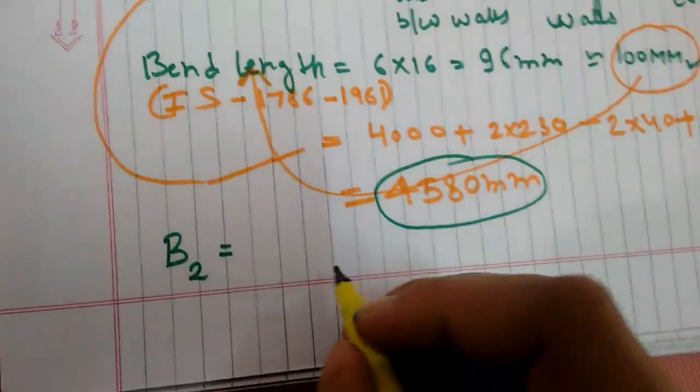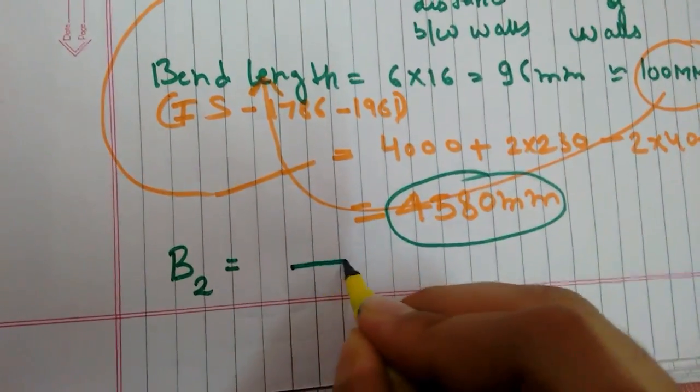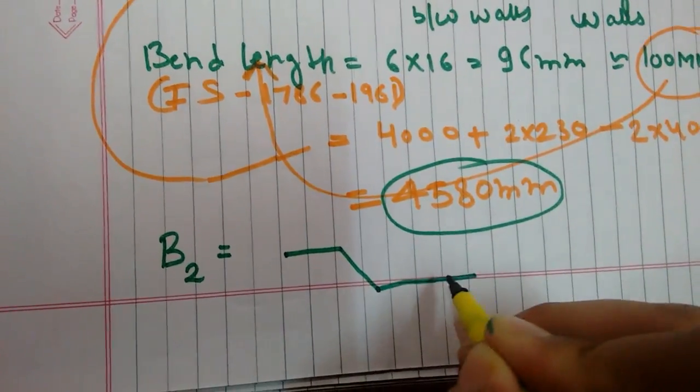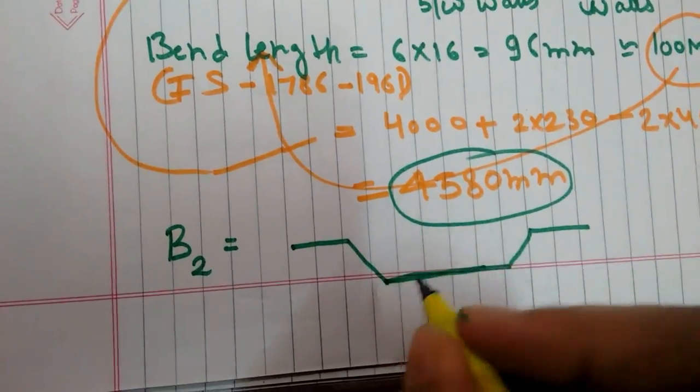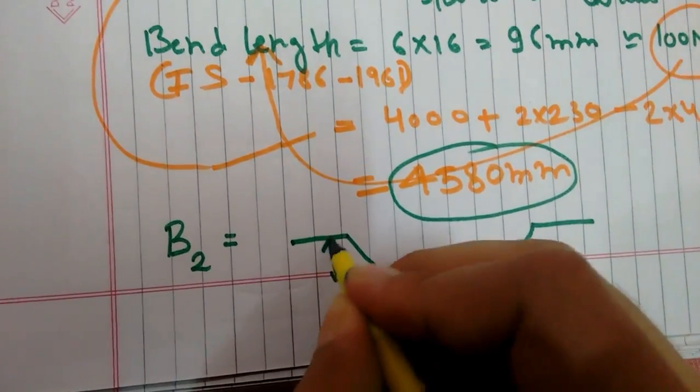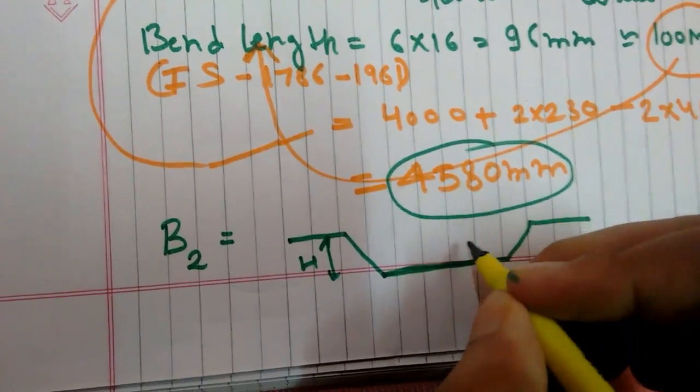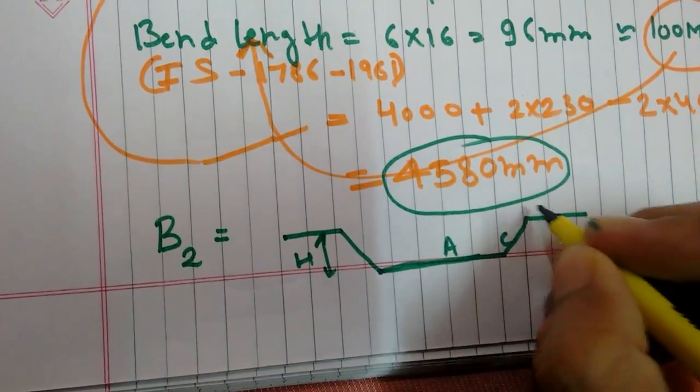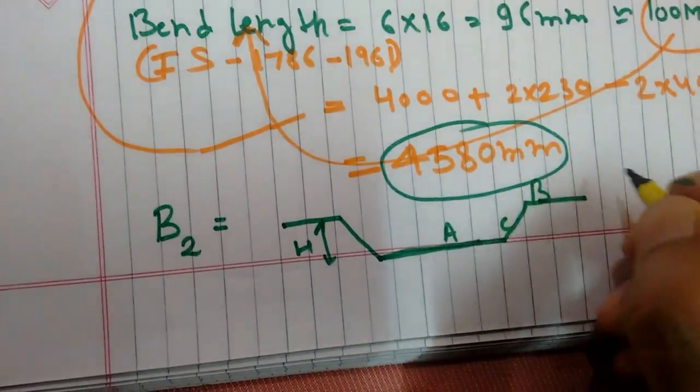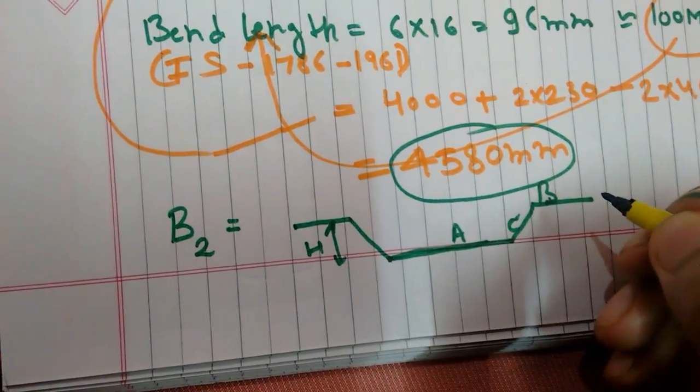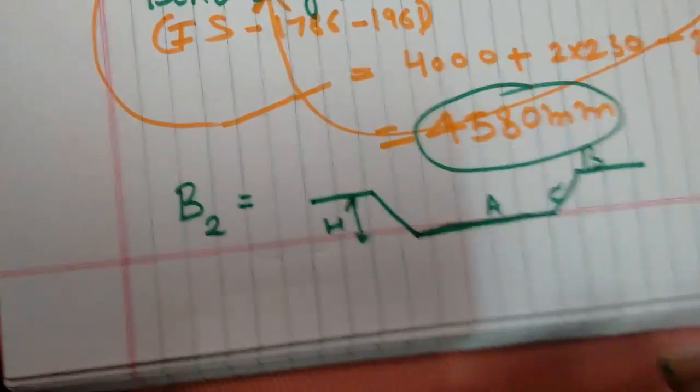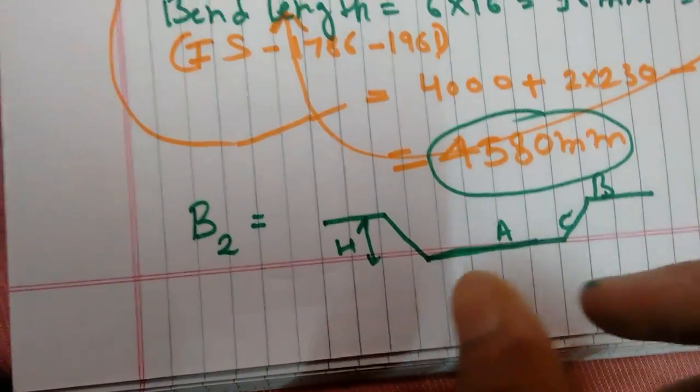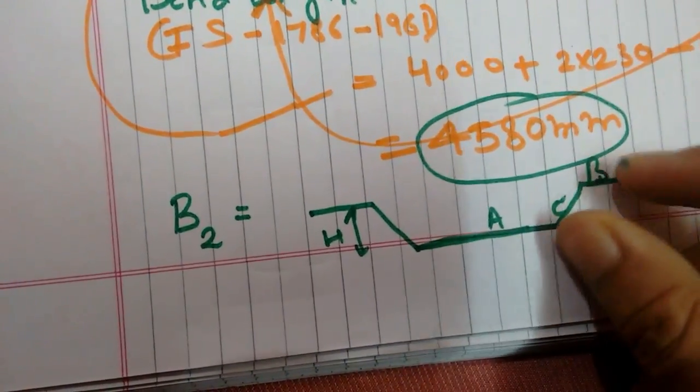This is the shape, and this is the height. This can be A and this is B, so length of bar B2 is equal to A plus B plus C.